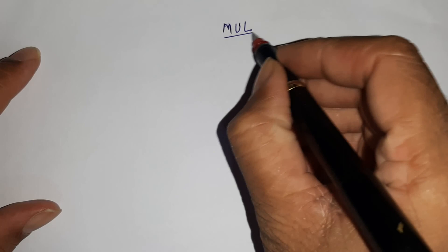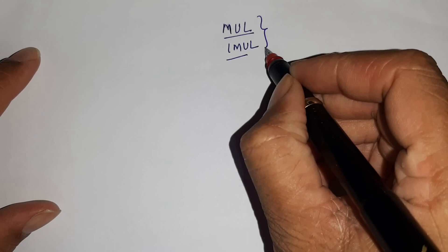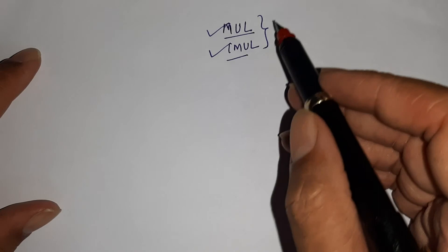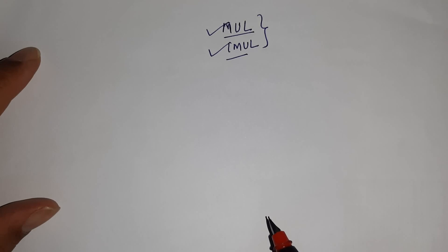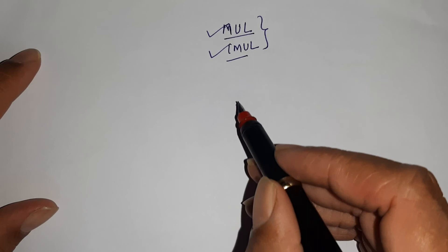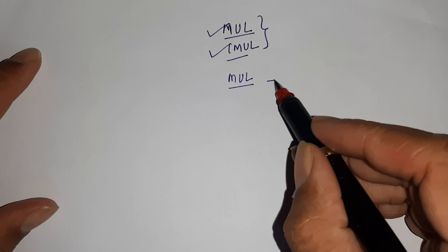Hello friends, I am Pradeep. In this video I will discuss multiplication instructions. In 8085 we have no multiplication instruction — we multiply numbers using the repetitive addition method. But in 8086 microprocessor we have two instructions for multiplication: one is MUL and the second is IMUL. I will discuss the working of MUL as well as IMUL.